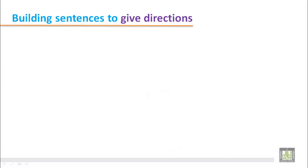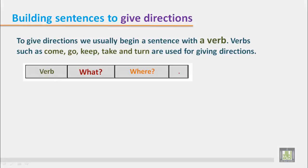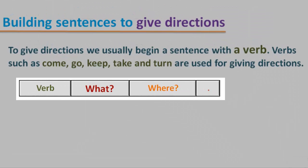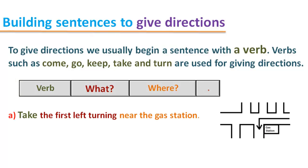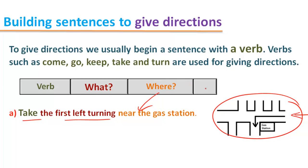Building Sentences to Give Directions. We usually begin a sentence with a verb, such as come, go, keep, take, and turn. We use these verbs for giving directions. This structure shows you how to write directions. Sentence a: In this picture, take the first left turning. You are coming from this way, so take the first left turning near the gas station. This is the gas station, so you are going to take the left turn near it.